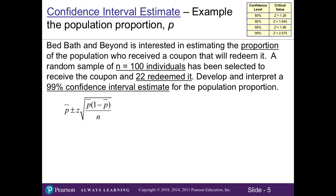So let's look at an example. Bed Bath & Beyond is interested in estimating the proportion of the population who received a coupon and used it. Say a random sample of 100 individuals has been selected to receive the coupon and 22 people redeemed it. Develop and interpret a 99% confidence interval estimate for the population proportion.